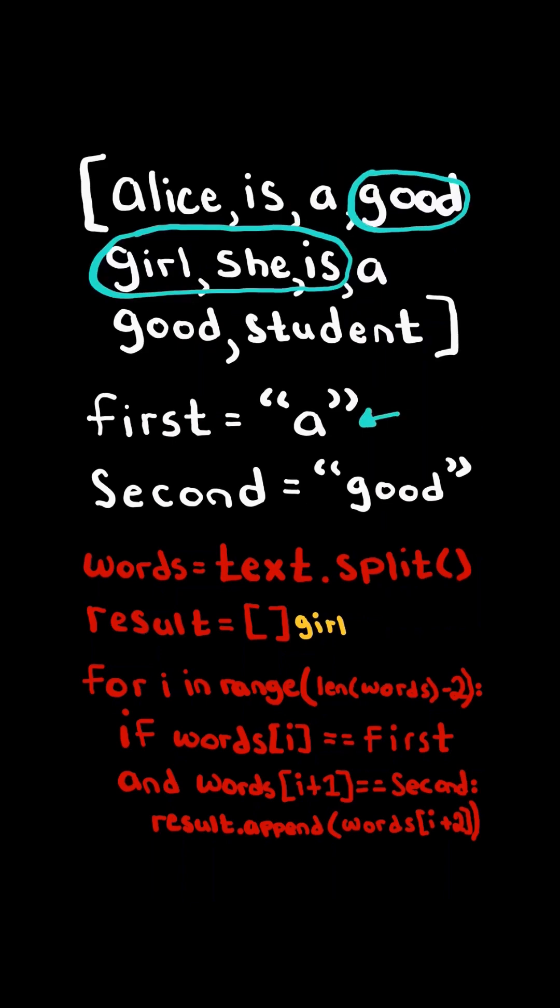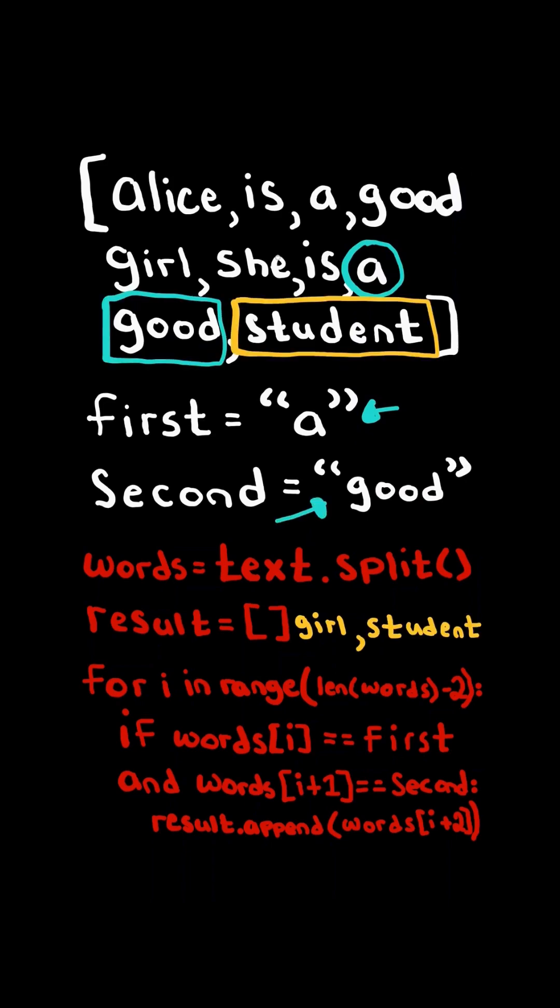None of these words equal first, so we skip them. Now we have come across a word that equals first, and we check the following word and it equals second, so we append the following third word to result.